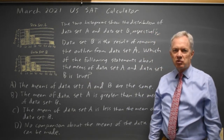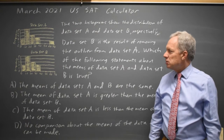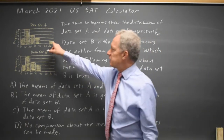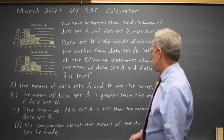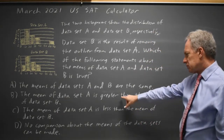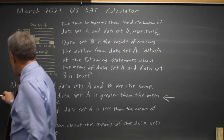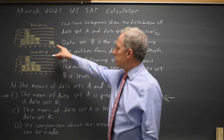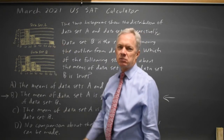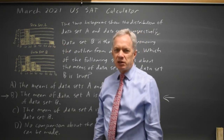There's a general rule that if you remove an observation that's higher than the mean, the mean will decrease. This tells you that the mean for data set A is greater than the mean for data set B, which is choice B. It's worth knowing that rule: if you remove something higher than the mean, your mean will drop. Conversely, if you remove something lower than the mean, the mean would rise.